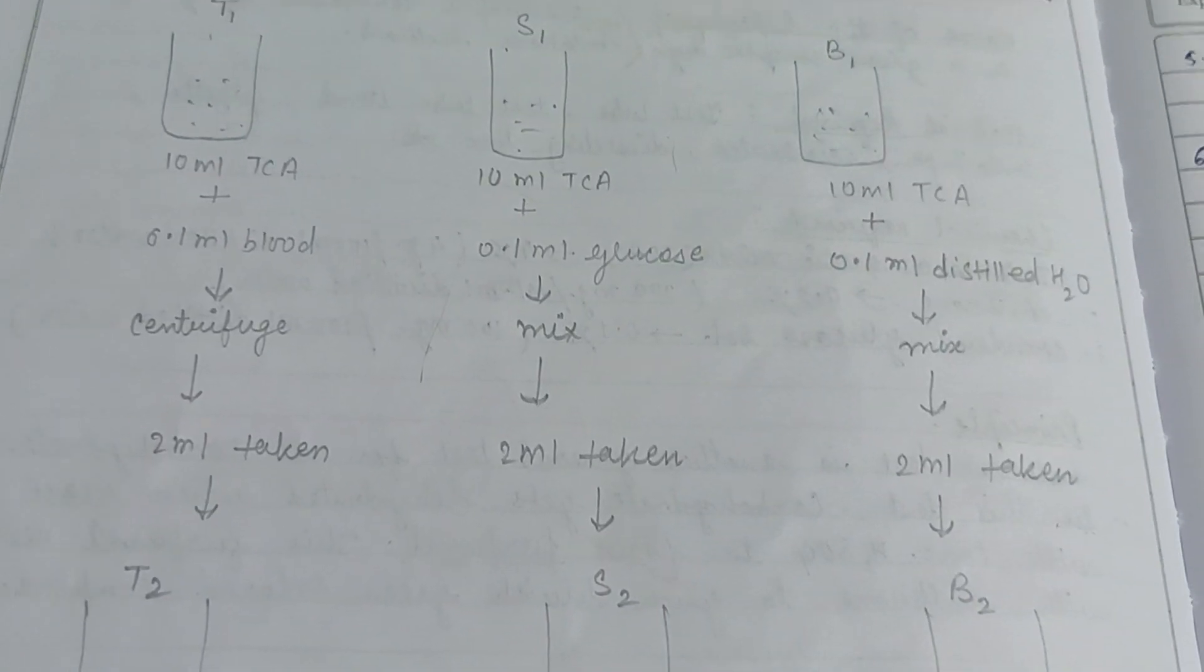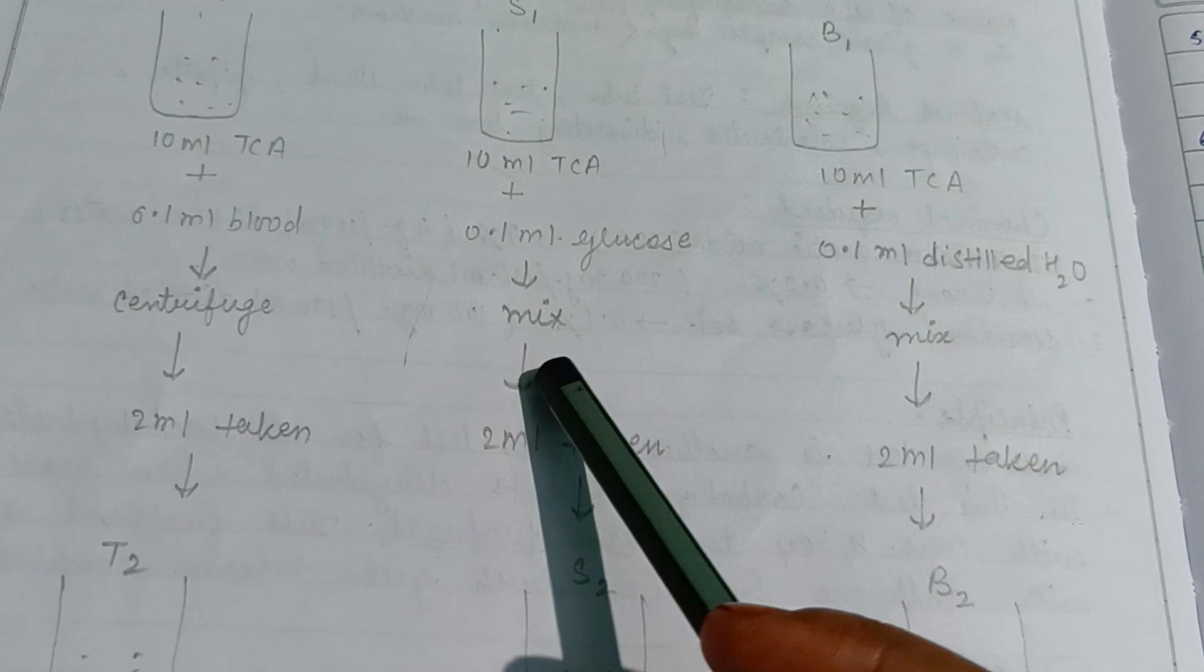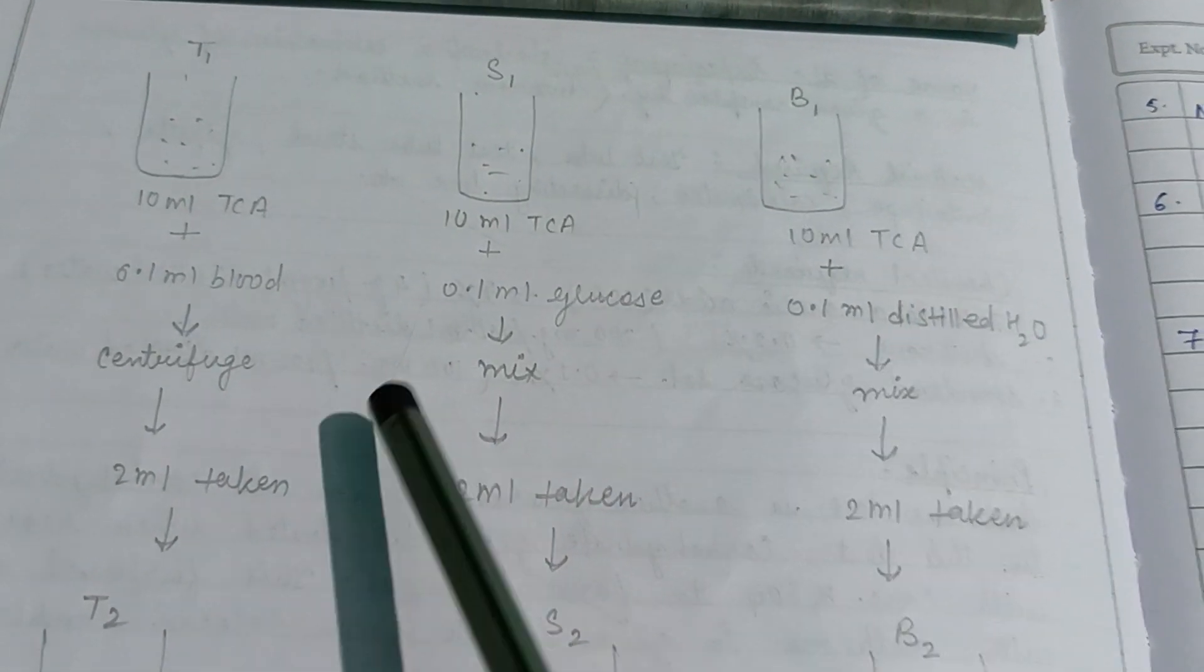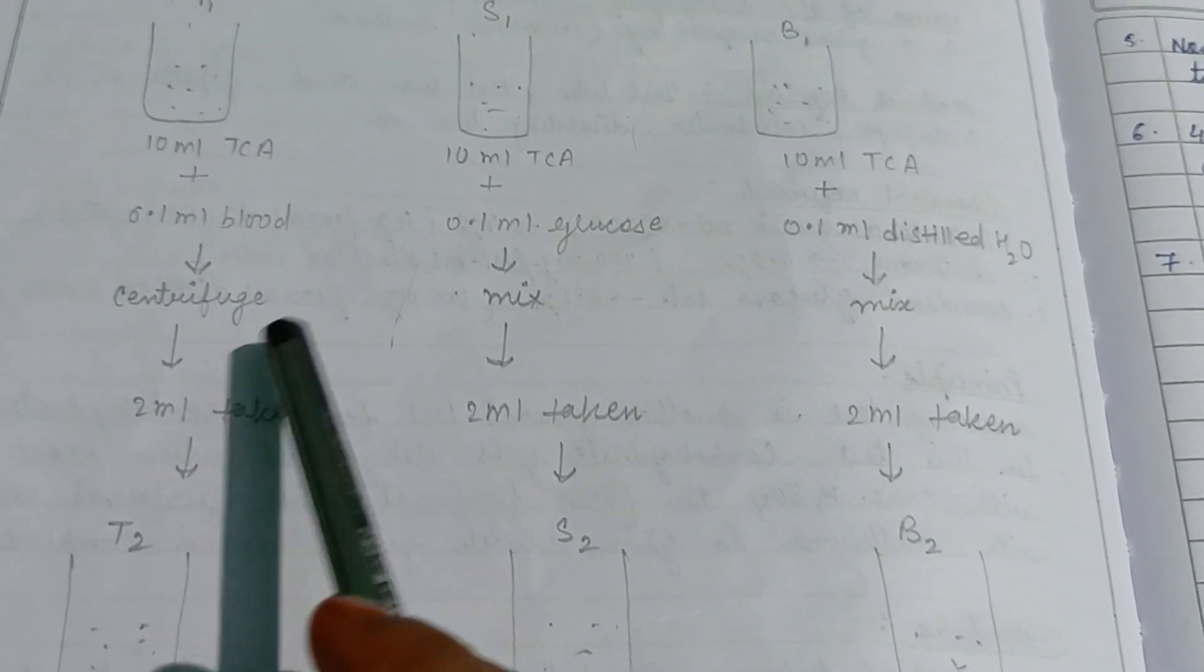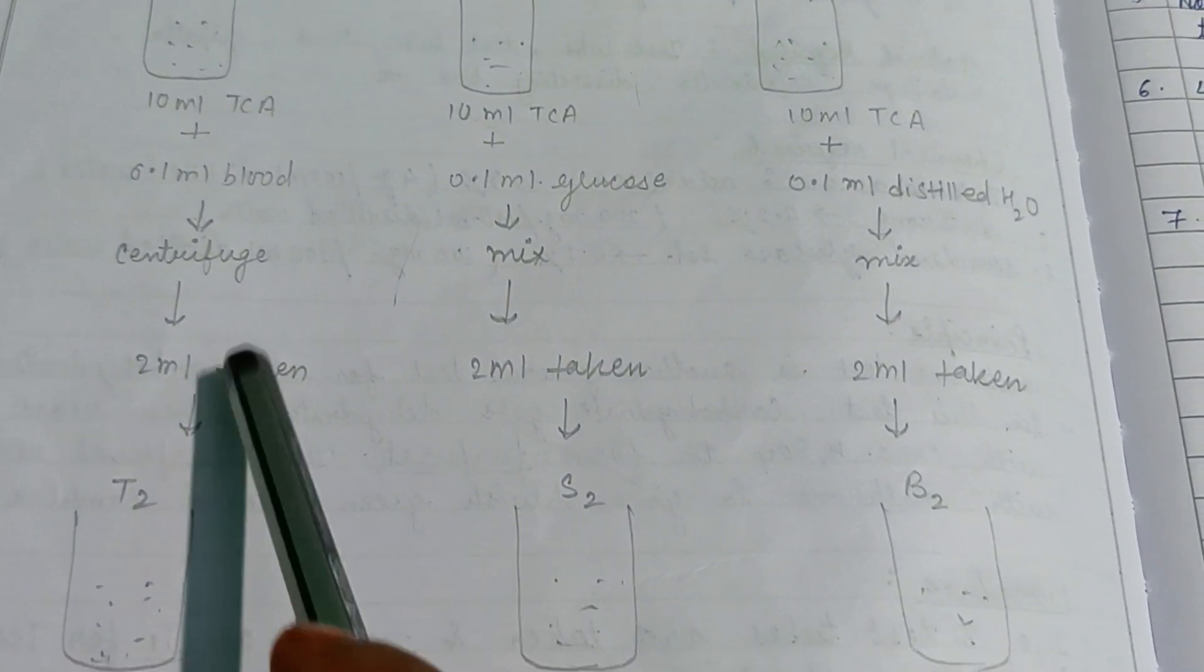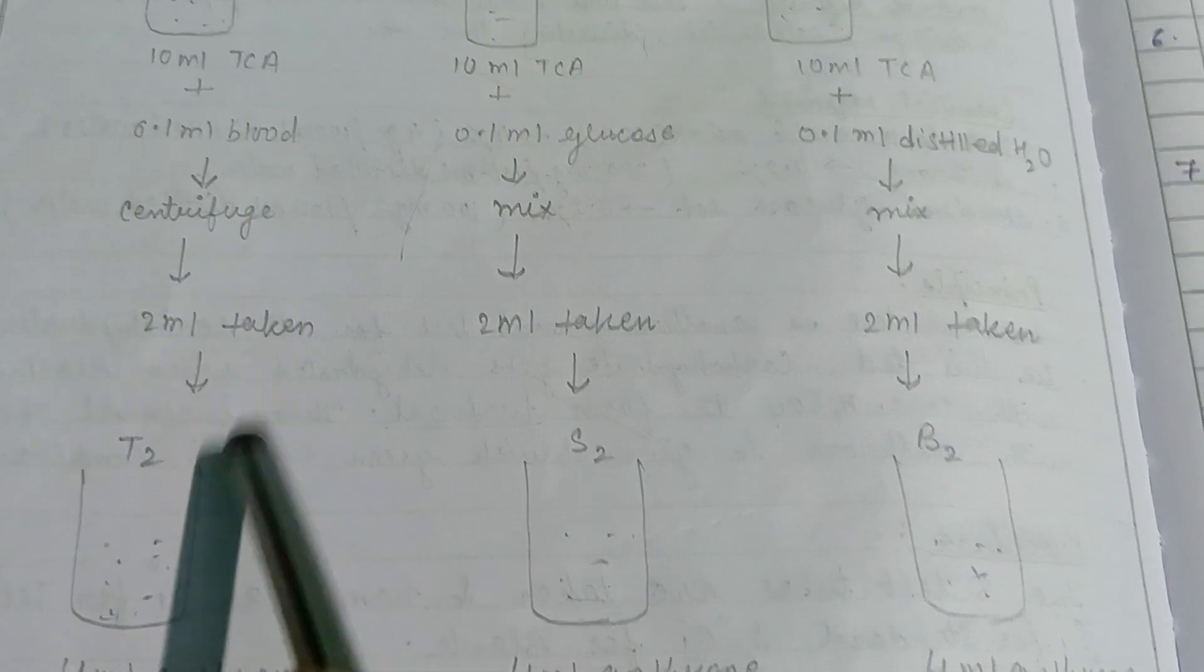Here is the reaction. In this procedure, 10 ml TCA is added in each tube named as T1, S1, and B1 respectively. Then in T1 test tube, 0.1 ml blood is added, it is centrifuged, and 2 ml taken in another test tube named as T2.